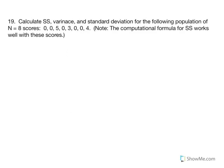Number 19: calculate the sum of squared deviations, variance, and standard deviation for the following population of scores. Please pay attention when working with a population versus a sample. When working with sample statistics, the variance is calculated slightly differently — we make those statistics unbiased by dividing by n minus 1 or degrees of freedom. We don't need to do that with population parameters because the variance calculated is the true variability of the distribution.